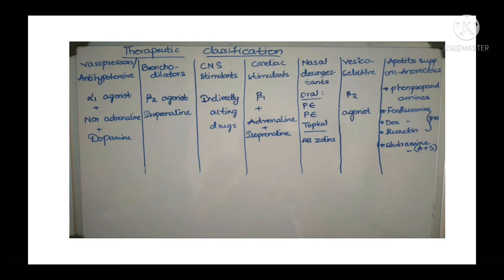The next class is bronchodilators. The lungs have beta 2 receptors, so all beta 2 agonists and isoprenaline (also called isoproterenol) come under bronchodilators — they cause bronchodilation. Under CNS stimulants we use indirectly acting drugs: amphetamine, dexamphetamine, and methamphetamine. These drugs do not directly act on receptors; instead they increase norepinephrine production. Cardiac stimulants relate to the heart, which has beta 1 receptors, so all beta 1 drugs come under cardiac stimulants.